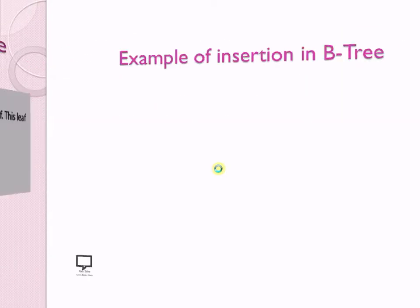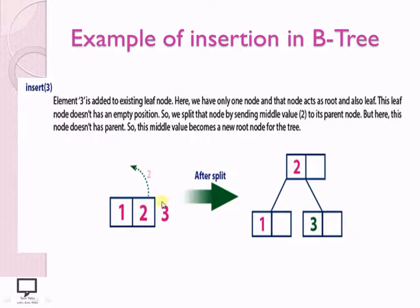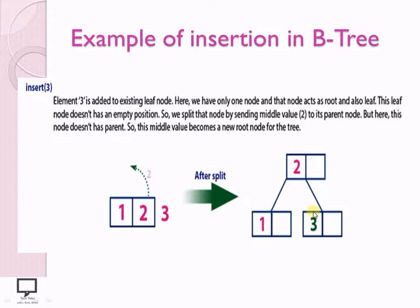For insertion of value 3: the leaf node is full, so we perform a split operation. We choose the middle element and send it to its parent. After splitting, 2 becomes the root node, maintaining BST property where all nodes in the left subtree are less than 2, and all nodes in the right subtree are greater than 2. So 3 is inserted as a new leaf node.